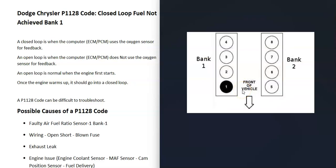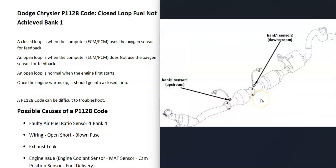In V6 and V8 engines, there are going to be two banks. Bank one is always the side of the engine with the number one cylinder, and the opposite of that is going to be bank two. So if you find bank one on your engine, that's going to be the side having problems. If you have a four cylinder, it wouldn't matter — you only have one bank.